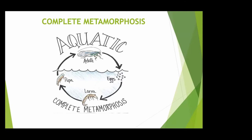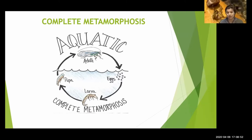Those larvae go through instars — shedding their exoskeleton from 4 to possibly 40 times — and then form a pupa. Caddis that have cases already have a little rock structure, basically a fort built around where they'll pupate. They've got this case around them and then pupate inside it.